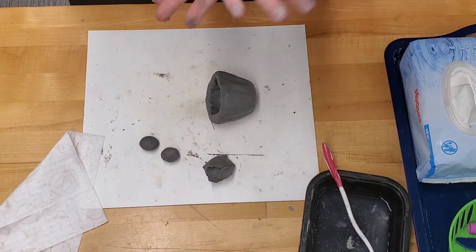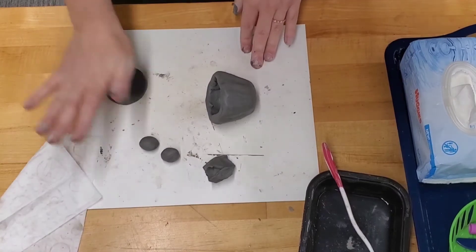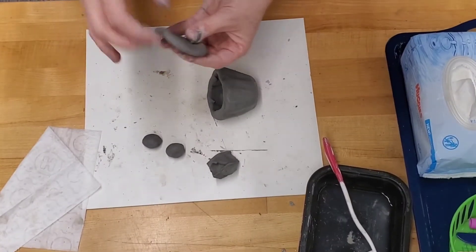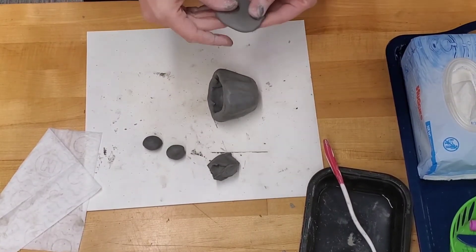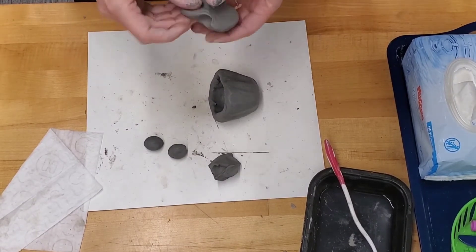Roll one into a ball and then squish it out to the thickness of an Oreo. Now, mold it into the shape of the back fin.